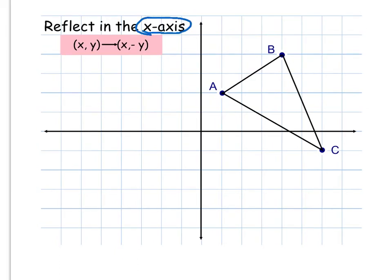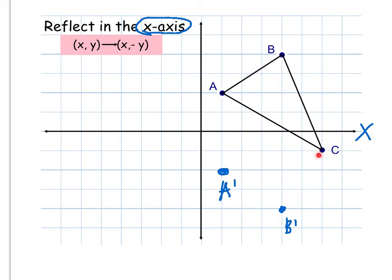In this example we are reflecting in the x-axis. The x-axis is our horizontal axis, which means we're going to take these two points and they're going to reflect below. This point, since it's below the x-axis, is going to reflect above. Point A is 2 units above the x-axis, so when we reflect it, it's going to be 2 units below — I'll put that as A prime. Same thing with B: 4 units above, so I will go 4 units below and label that B prime. C is already below the x-axis, so when it's 1 unit below, the reflection is going to be 1 unit above. If I connect those points, I have the exact same triangle, just reflected over the x-axis.